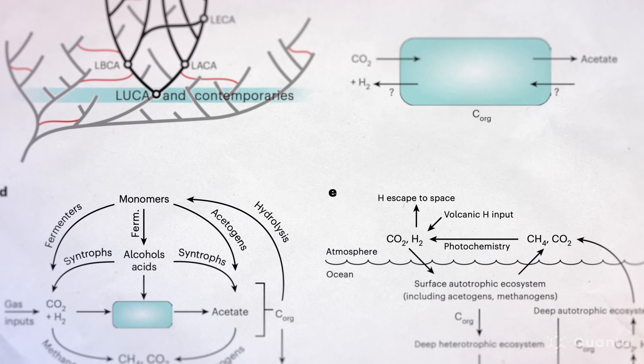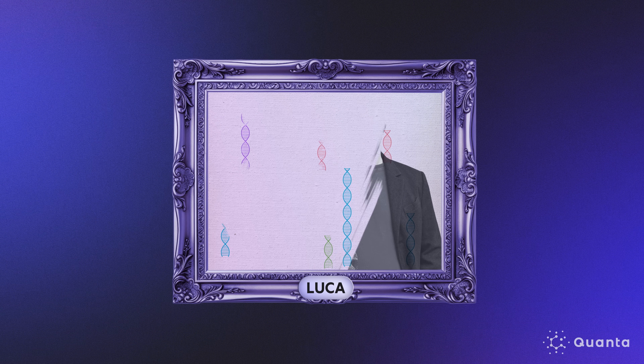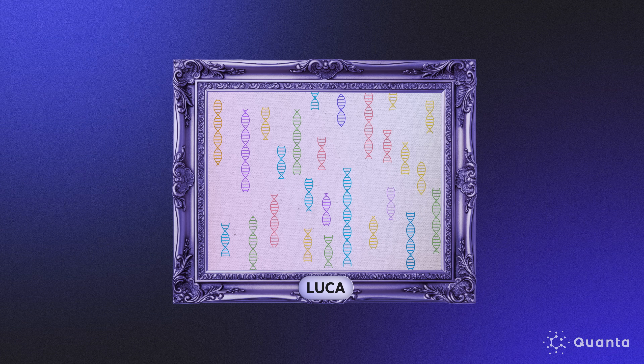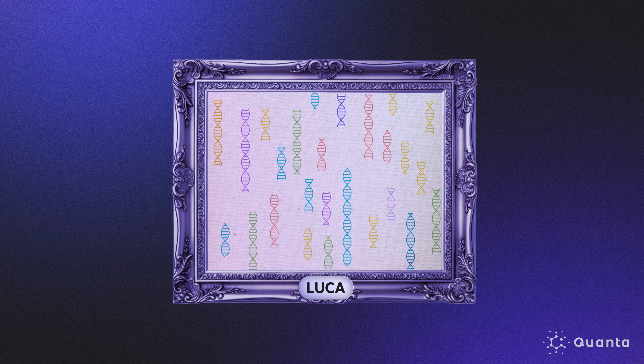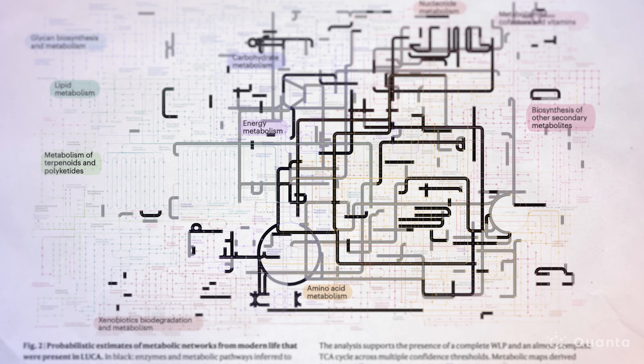We're paleontologists, most of us. We're interested in understanding early evolutionary history. However, we can only really get back at this ancestral point by looking at modern organisms. To reveal our evolutionary history, Edmund Moody, Phil Donahue, and their team sought to reconstruct Luca's genome, or collection of genes, and from these try to build a working metabolic network as a basis to understand what Luca would have been like.